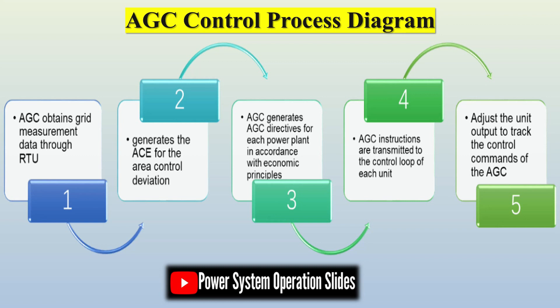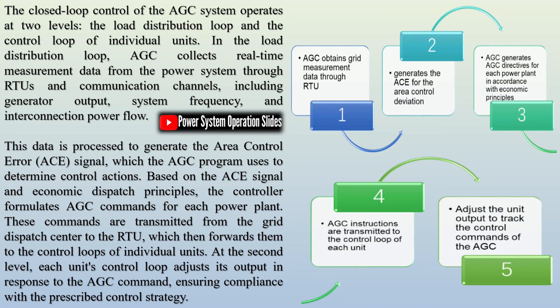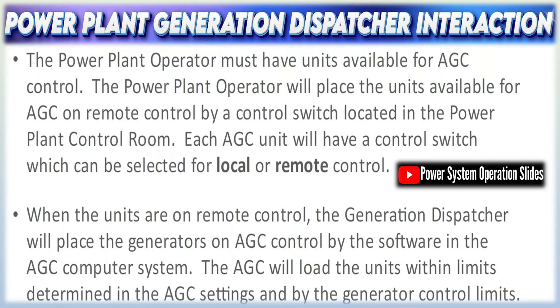ACE is computed as the combination of two components: the difference between actual and scheduled net power interchange (i.e., difference in the tie-line flows), and a term proportional to the frequency deviation from nominal, often weighted by a frequency bias factor. The AGC's goal is to drive A.C.E. to zero, ensuring both proper power exchanges and stable frequency. ACE is central to how AGC operates: positive A.C.E. indicates that the area is over-generated or exporting more power than scheduled along with a possible frequency rise.